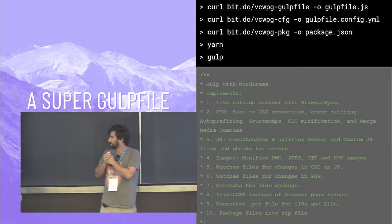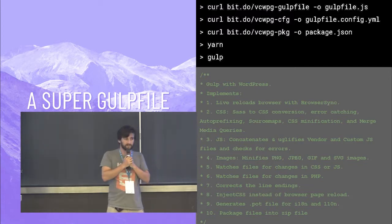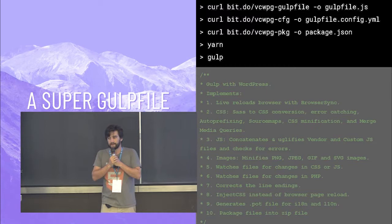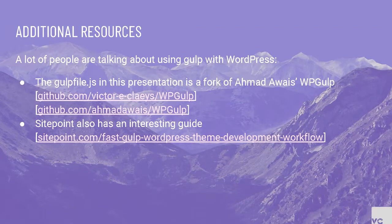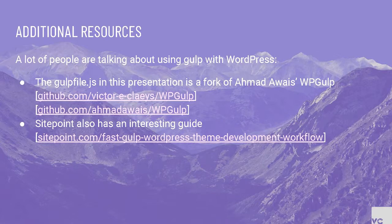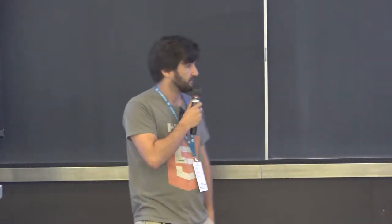For JavaScript, it concatenates, uglifies vendor and custom JS files, and checks for errors — if you have any, it tells you in the terminal. You can handle images as well — it compresses them. It watches for changes, so every time you save it compiles into a file. Same thing with PHP: if you make any changes, it live reloads. It also corrects line endings for different file systems.